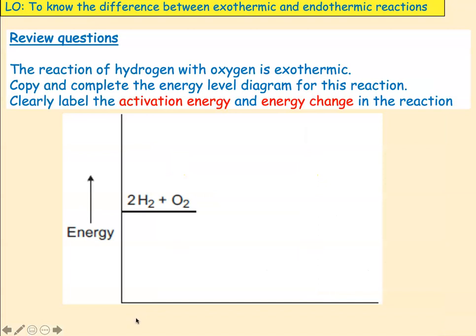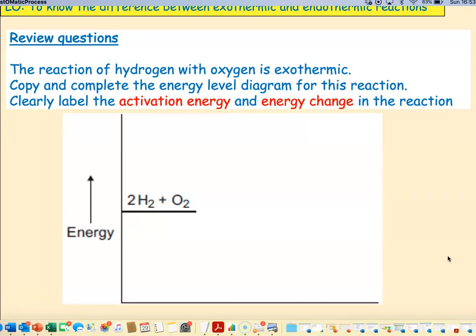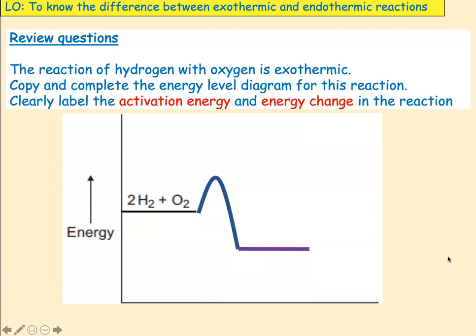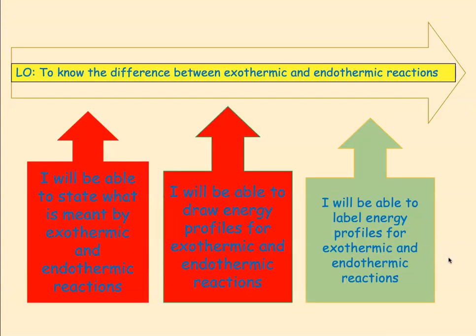Just one last question to test this success criteria. The reaction of hydrogen with oxygen is exothermic. Copy the diagram, sketch it on a piece of paper, and draw what it would look like for an exothermic reaction. Show the activation energy and the energy change. The shape of an exothermic reaction will look like that — it doesn't matter how high you've drawn it, as long as the products are at a lower level than the reactant energy and there's a peak. The activation energy is shown from the peak to the reactant line, and the energy change is shown from the reactant energy to the product energy.